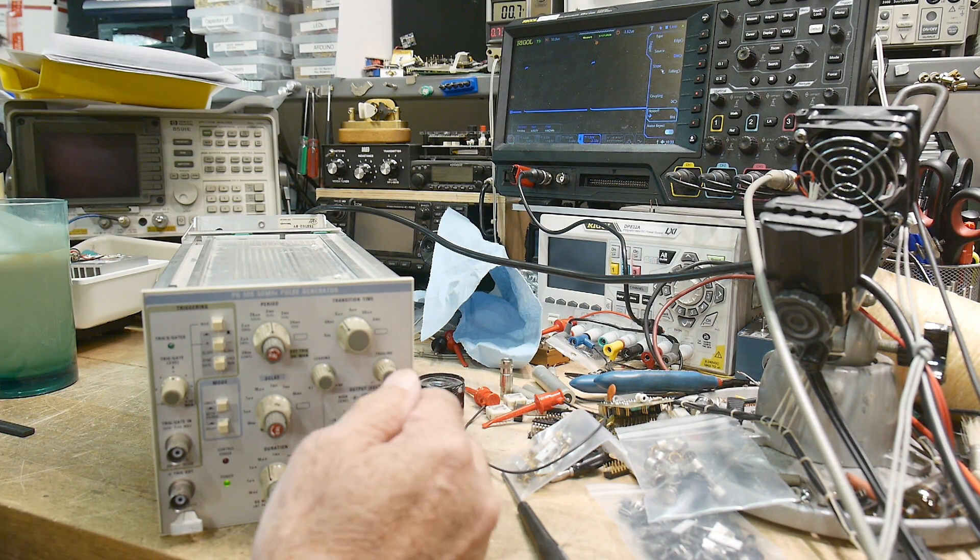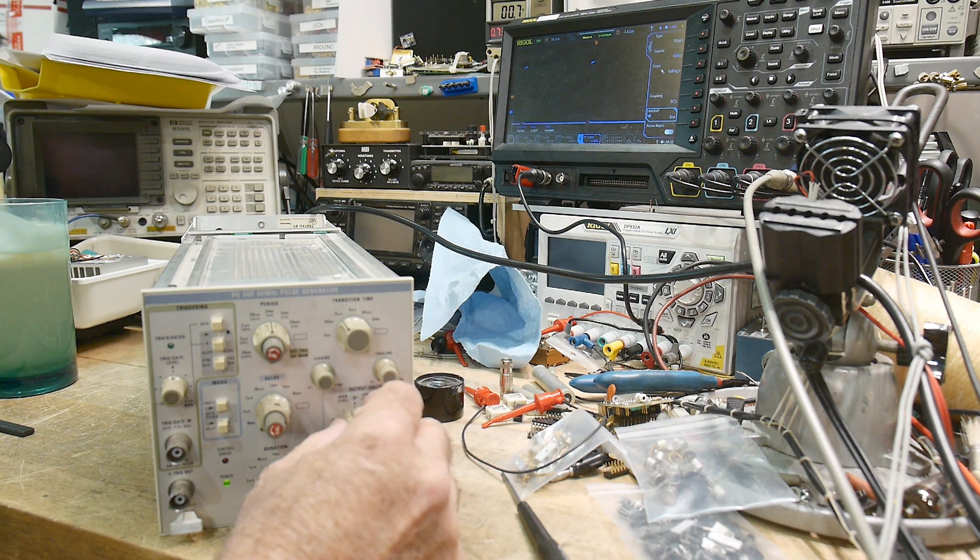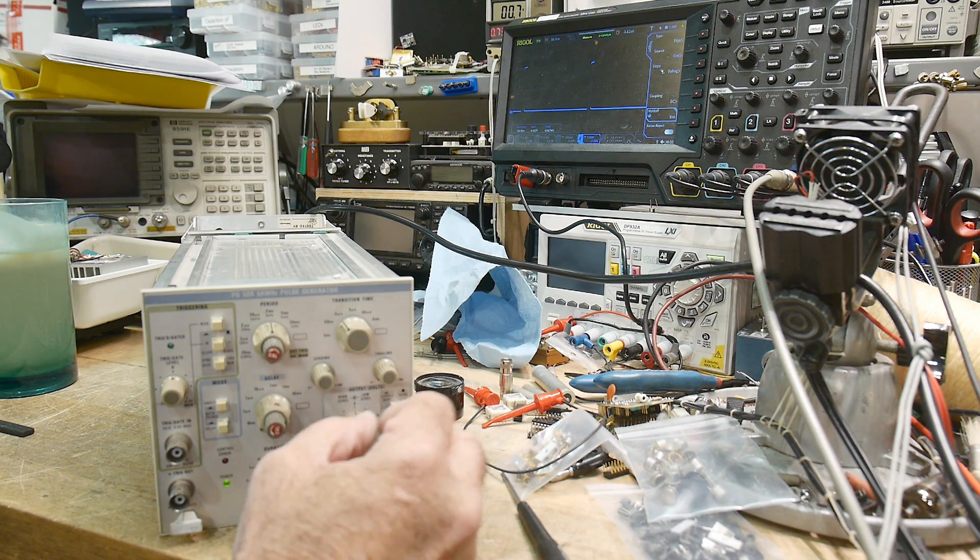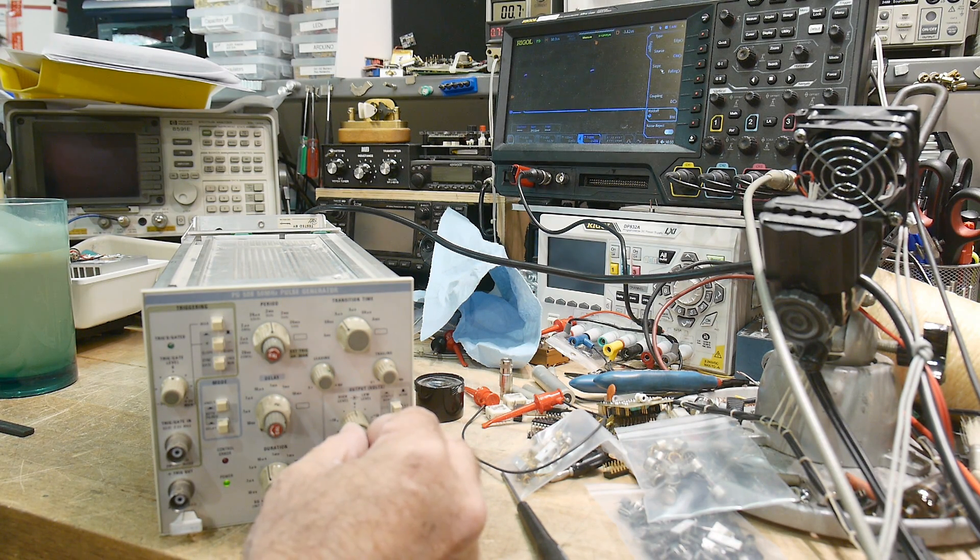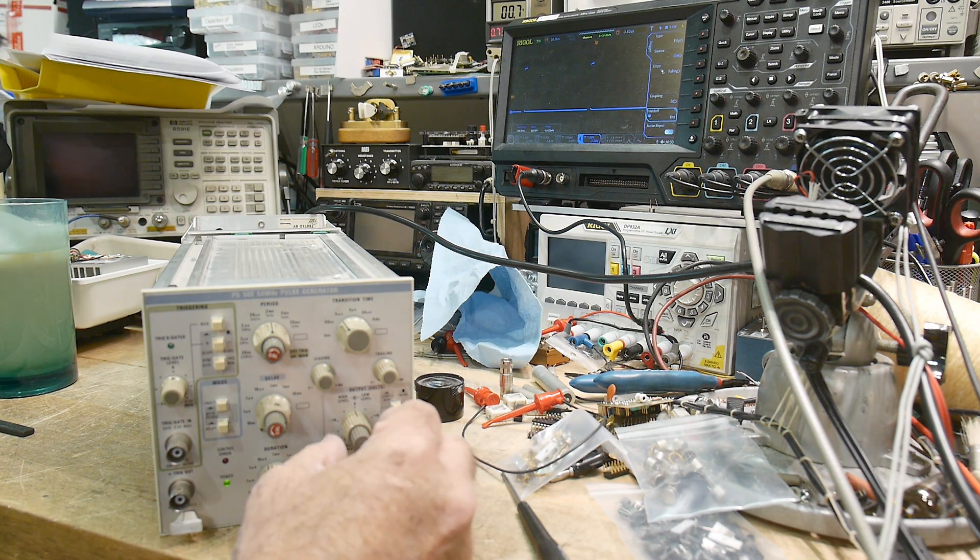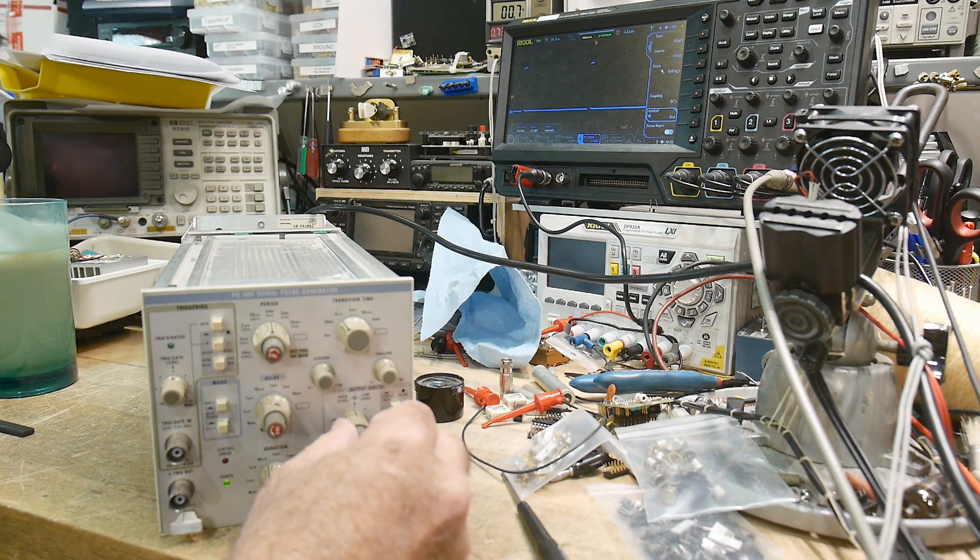These two knobs are very interesting. They set the high voltage and the low voltage. I can set the low voltage at ground and then the high voltage I can move up and down independently. So I can make it two volts, four volts, five volts.